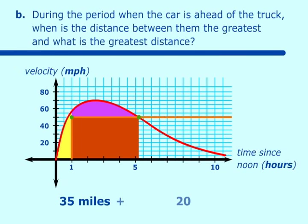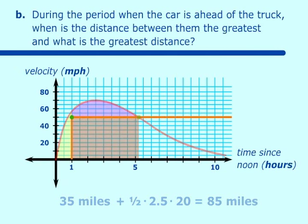Again, we are going to add up all the squares, and this time we find out there are approximately 20 squares. Again, multiply it by the one-half and the 2.5 and we get, adding that to 35, we get a total of 85 miles. That's when they are furthest apart.